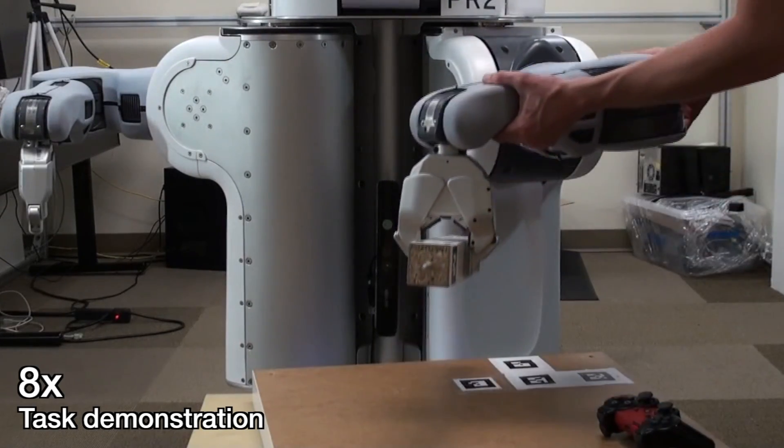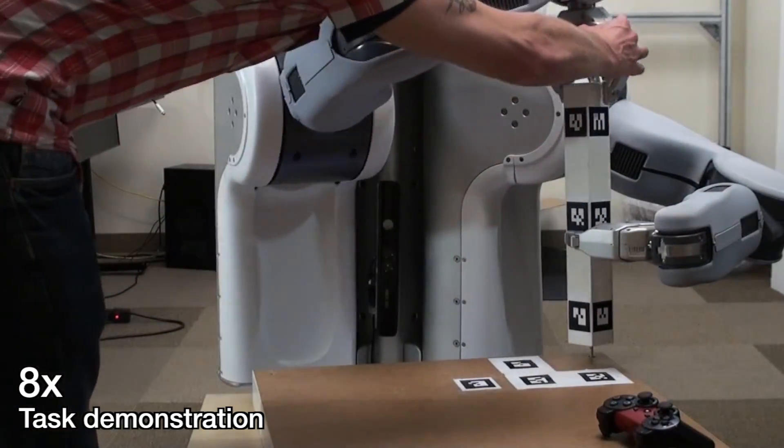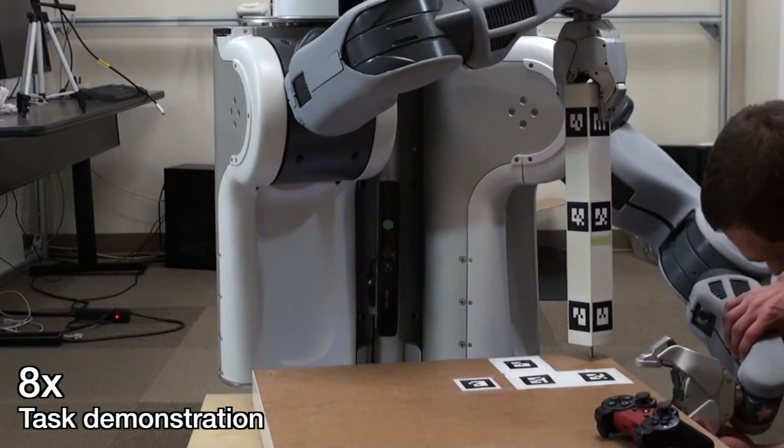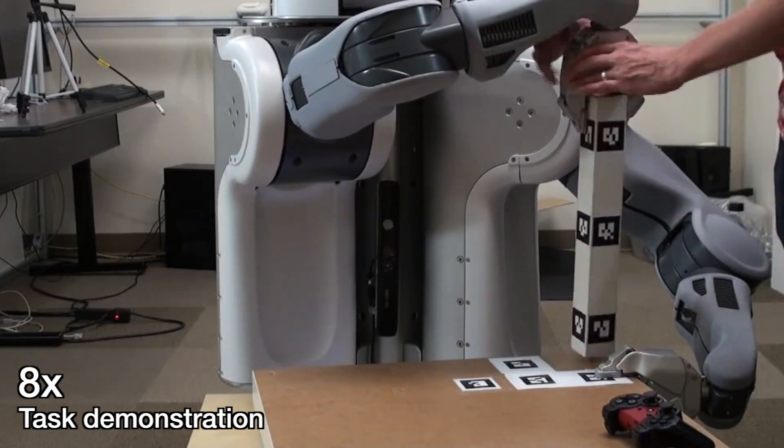First, the user provides kinesthetic demonstrations of the table assembly tasks seen here. After eight such demonstrations are collected, they are combined, automatically segmented, and turned into a finite state representation of the task.